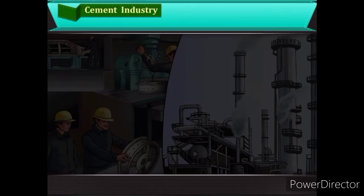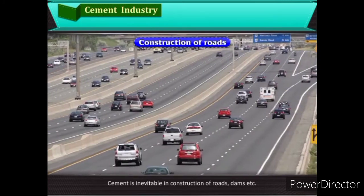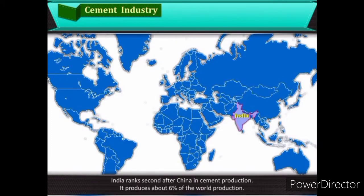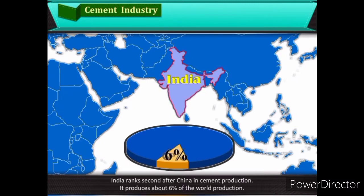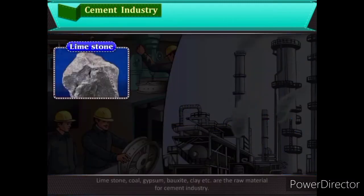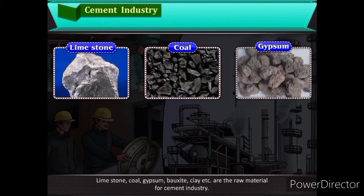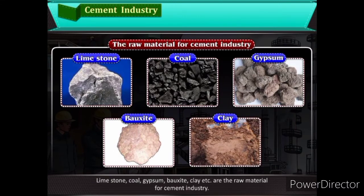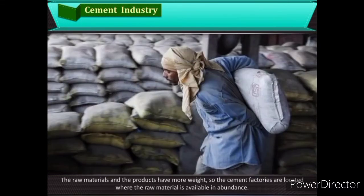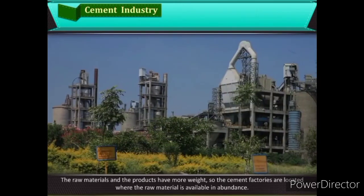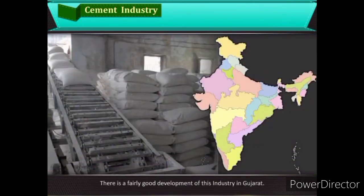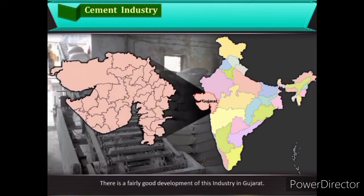Cement Industry: Cement is inevitable in the construction of roads, dams, etc. India ranks second after China in cement production, producing about 6% of world production. Limestone, coal, gypsum, bauxite, clay, etc., are the raw materials for cement industry. Since raw materials and products have more weight, cement factories are located where raw material is available in abundance. There is a fairly good development of this industry in Gujarat.